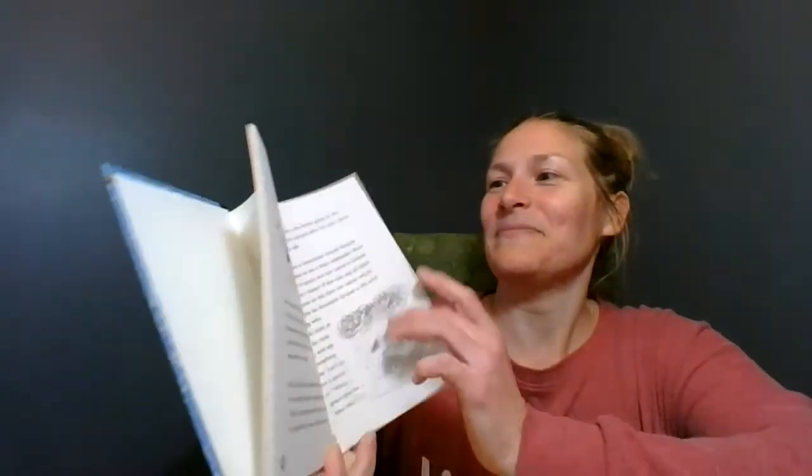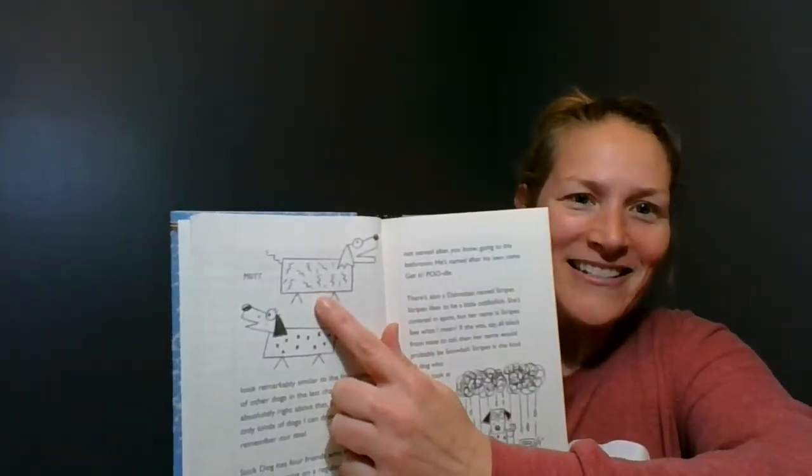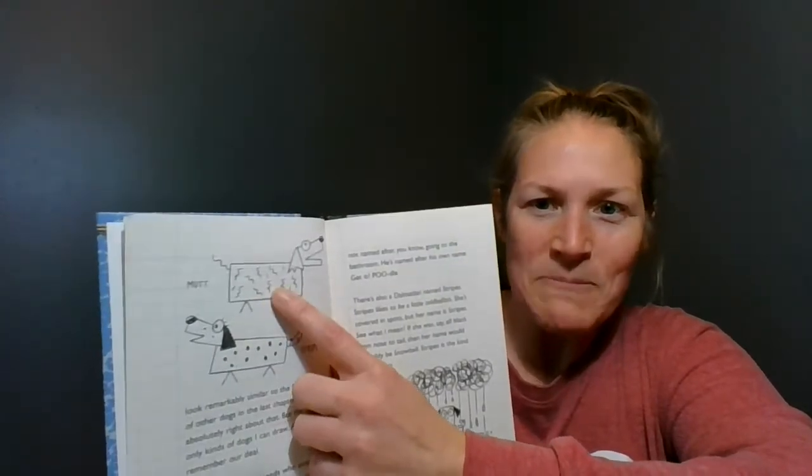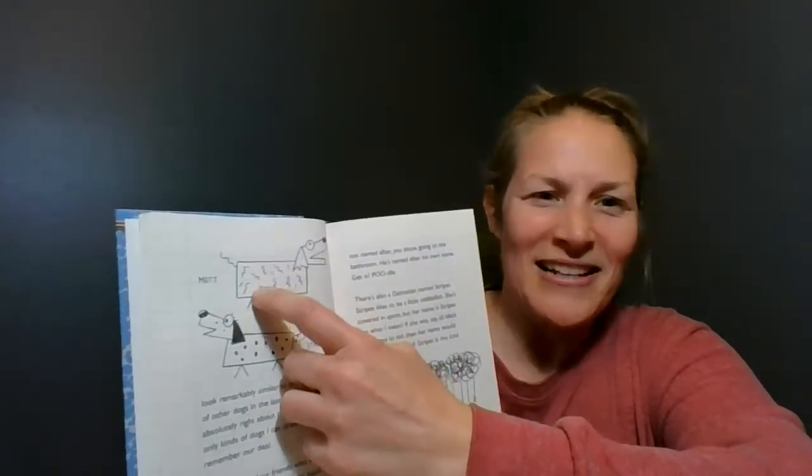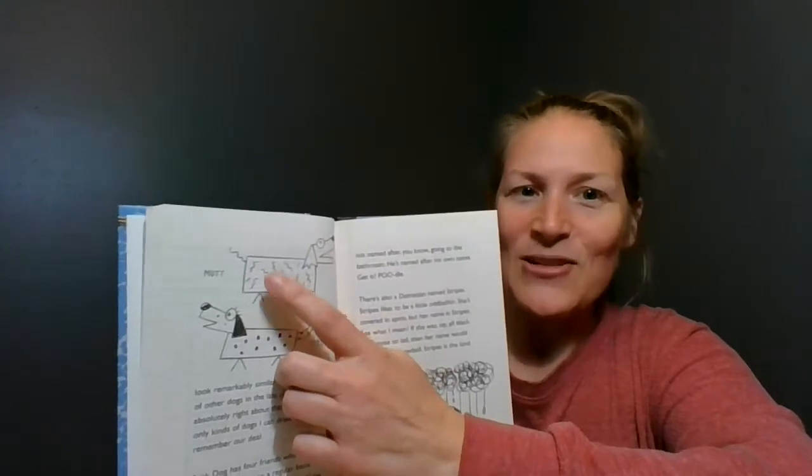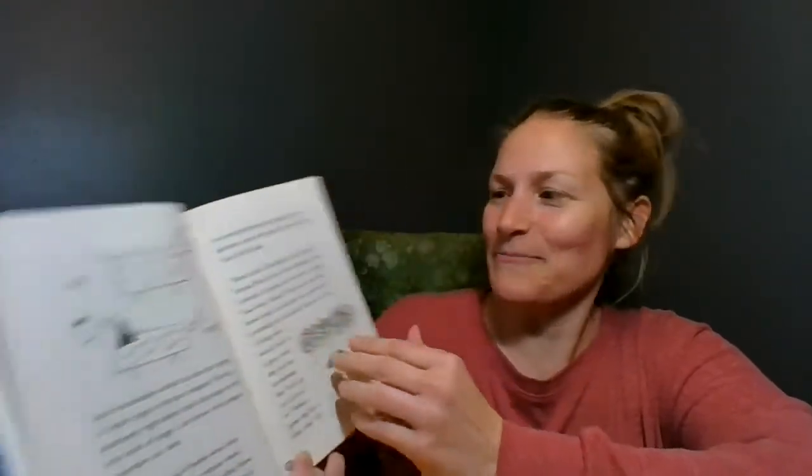Then there's a dachshund, her name is Karen. Let's go back and look at Karen. There she is, there's Karen. It's kind of a human name but it's her name and there's not much we can do about it.